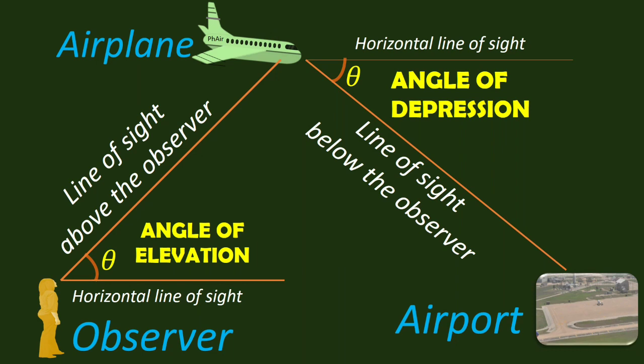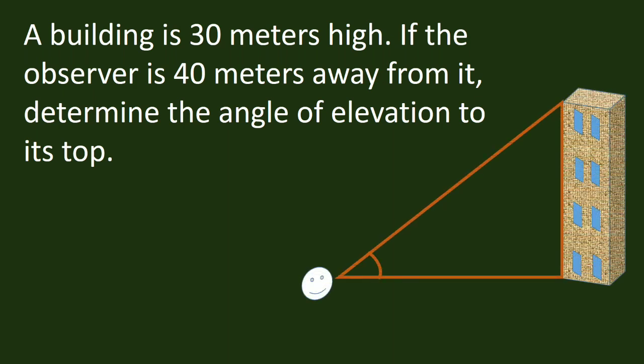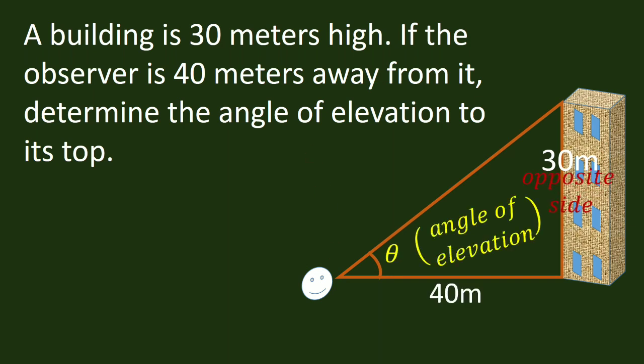Let's have examples. A building is 30 meters high. If the observer is 40 meters away from it, determine the angle of elevation to its top. The height of the building is 30 meters and the distance from the building to the observer is 40 meters. We are about to find the angle of elevation.